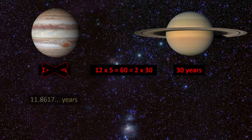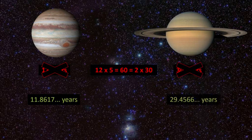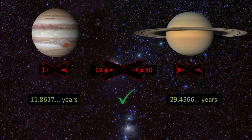but 11.86177 years, and Saturn's orbital period is not 30 years, but 29.4566 years. Therefore, complex dynamic systems like the solar system avoid frequency ratios of whole numbers.